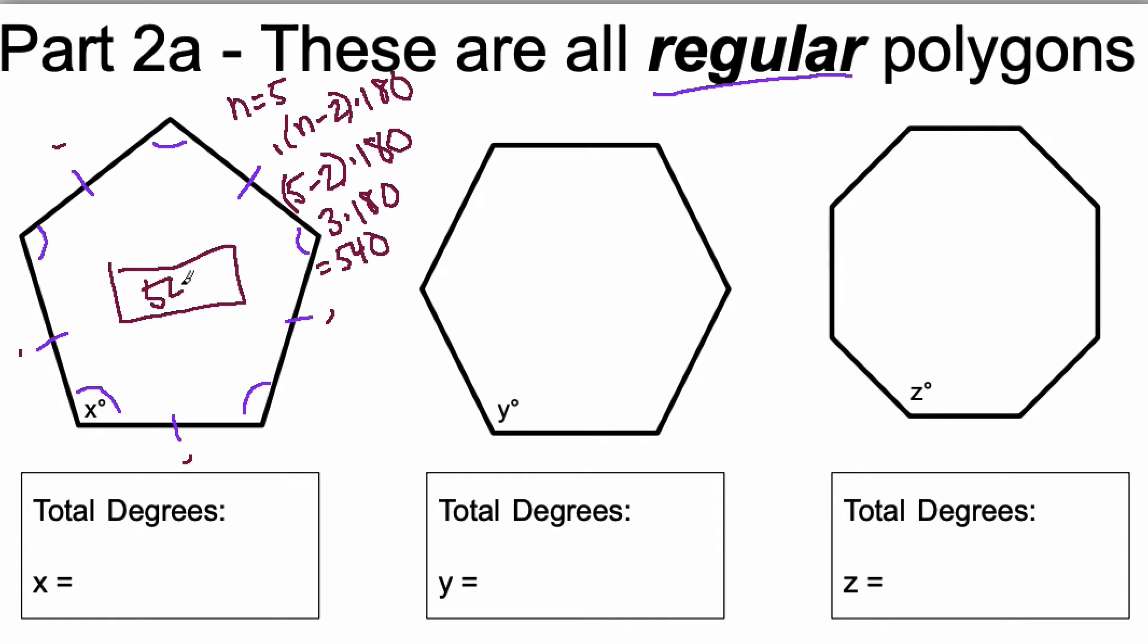So I know that there's a total of 540 degrees inside this pentagon but now I need to split it up between five equal angles. So I'm going to have to do 540 divided by 5. This comes out to be 108. So each angle is a measure of 108.